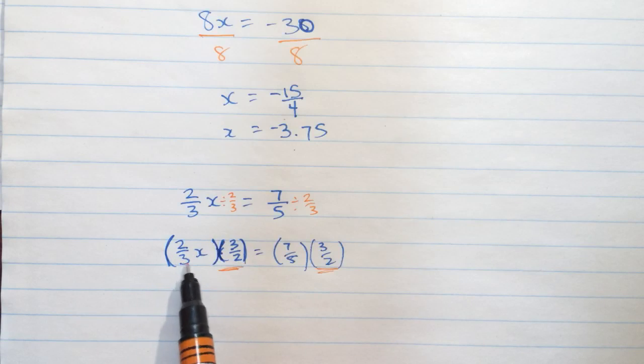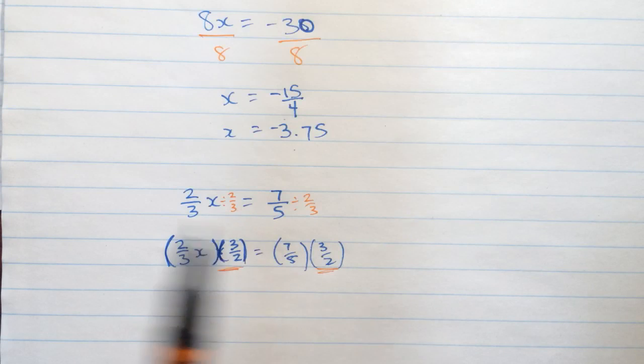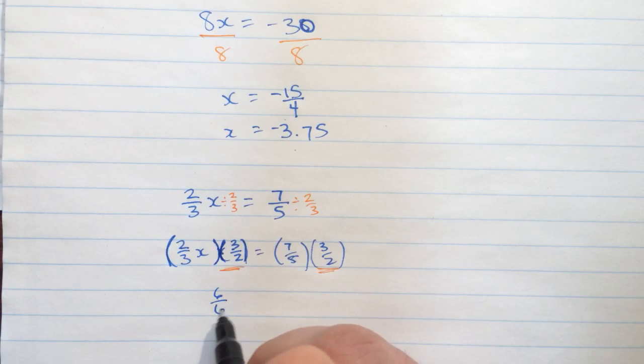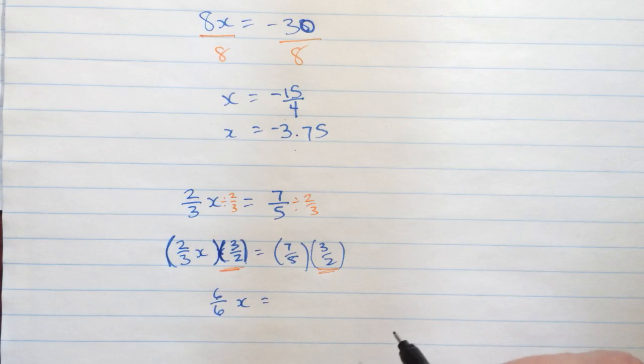2 times 3 is 6. 3 times 2 is 6. That'll be 6 over 6. Maybe I'll just write that out. That's 6 over 6 times x, which is the same as 1x.